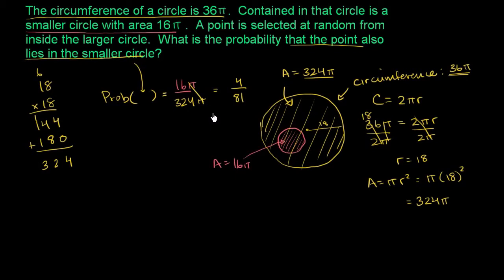So the probability, so I didn't even draw this to scale. This area is actually much smaller when you do it to scale. The probability that if you were to randomly select a point from the larger circle that it also lies in the smaller one is the ratio of the areas, the ratio of the smaller circle to the larger one, and that is 4 81ths.